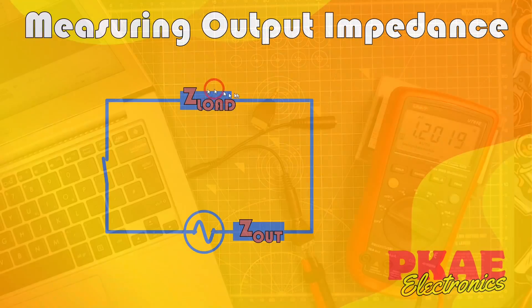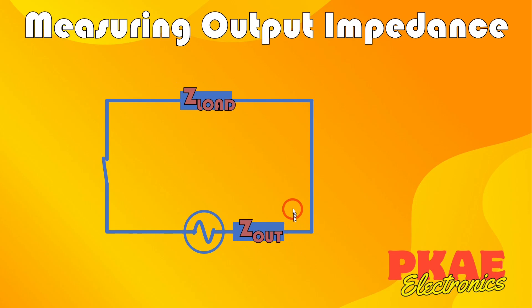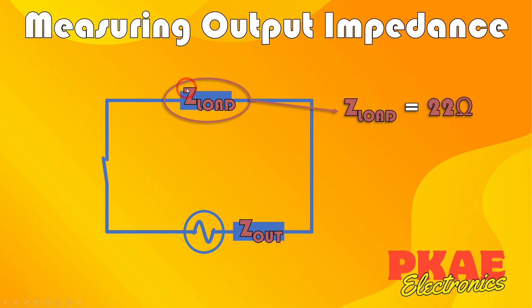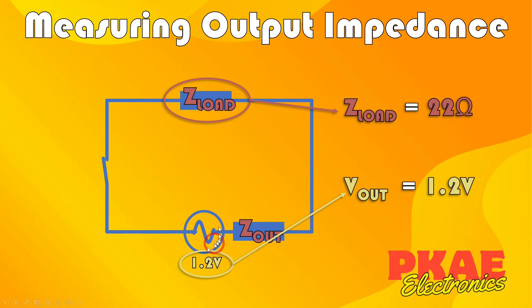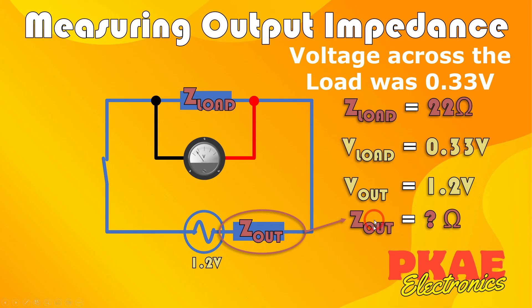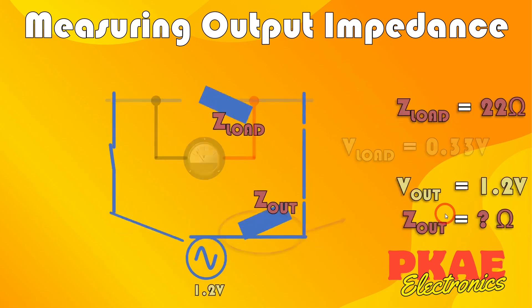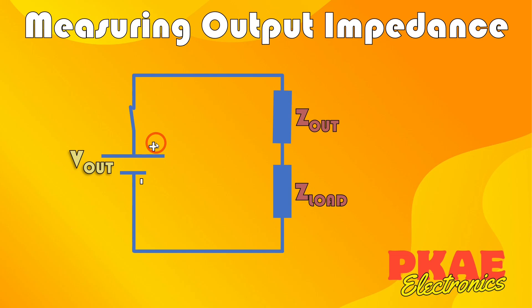Let's look at the math behind that. This represents the circuit we just tested — the laptop headphone output jack with some driving circuitry that has an inherent output impedance, which is the unknown we're trying to find. Over here we have the load, which would be your headphones, simulated by the 22-ohm resistor. If we rearrange this as a vertical circuit showing it in DC — it makes it easier to follow, and it makes no difference for this purpose — this looks exactly like a voltage divider.